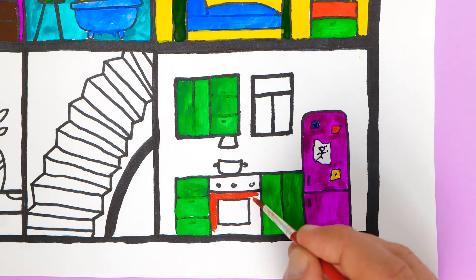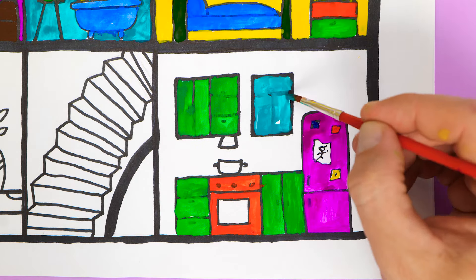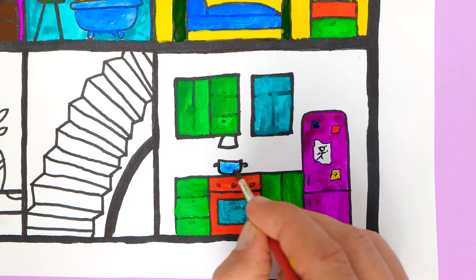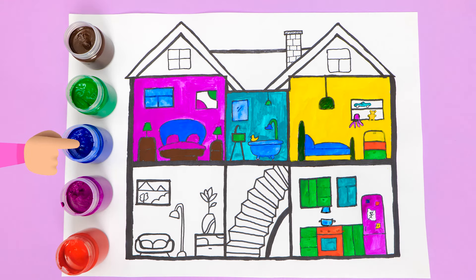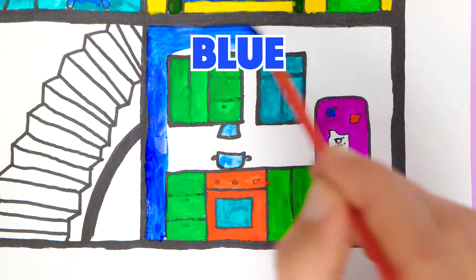Have you ever seen a red stove, friends? Well, now you have. And for the walls, let's choose this color. Do you still remember what it's called? Well done. It's blue color.